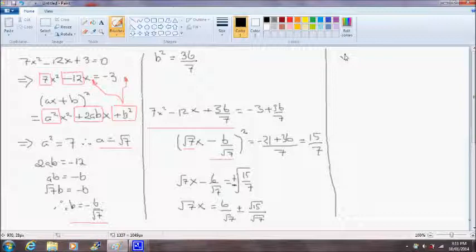So finally, if we isolate x, we'll get 6 plus or minus the square root of 15 divided by 7.